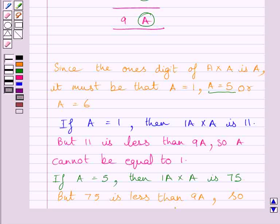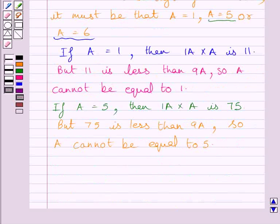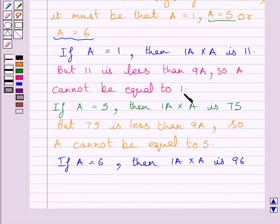If A equals 6, then 1A multiplied by A is 96. This value is equal to the product 9A. So, the correct value of A is 6.